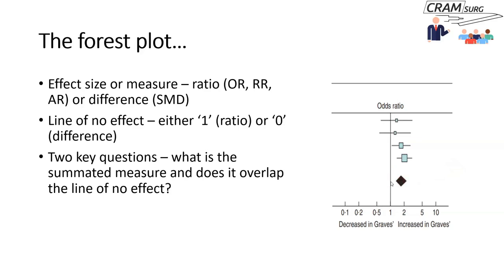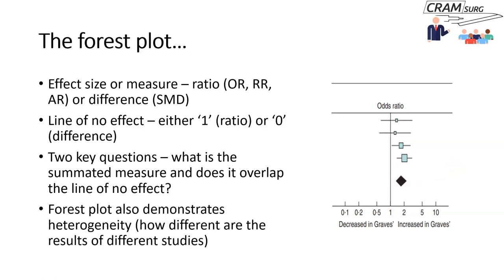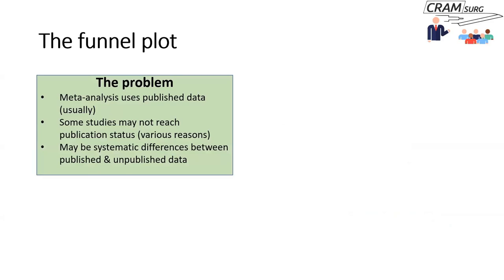The two key questions when looking at a forest plot are: first, what is the summated measure — for that, you look at the middle of the diamond and the vertical dotted red line; and second, do the edges of the diamond overlap the line of no effect? Also, keep in mind that the forest plot shows you statistical heterogeneity. In this particular forest plot, all of the squares are on the same side of the line of no effect, which suggests there is not much statistical heterogeneity in this meta-analysis.